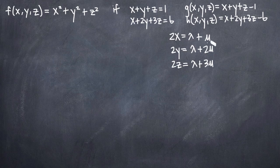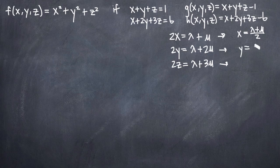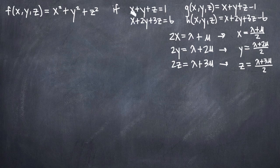Our next goal is to solve each equation for x, y, and z. Dividing both sides of each equation by 2, we get: x equals (lambda plus mu) over 2; y equals (lambda plus 2 mu) over 2; and z equals (lambda plus 3 mu) over 2. Now we want to plug these values into our constraint equations.